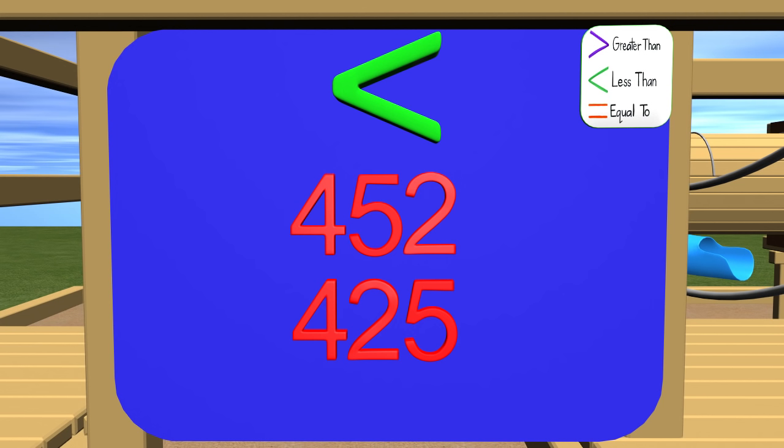Let's move on to the tens place. In the tens place, in the top number we have 50. And in the number below, we have 20. Which number is greater, 50 or 20? The 50 is greater, so right away we know that 452 is a bigger number.